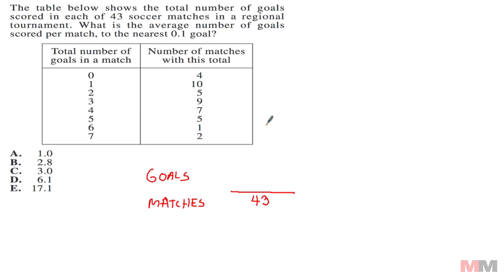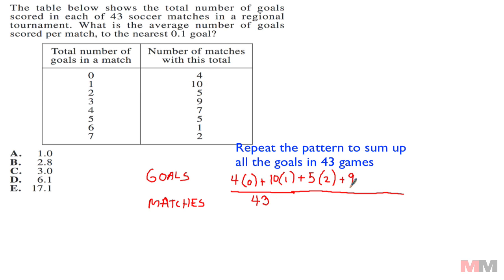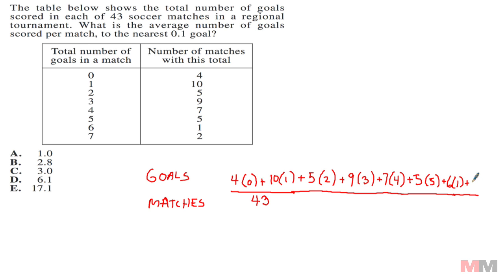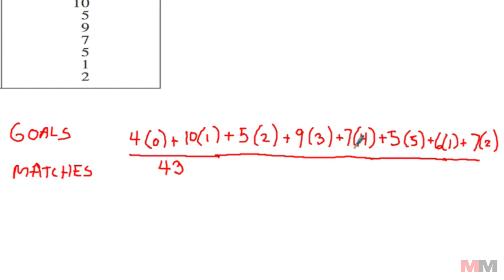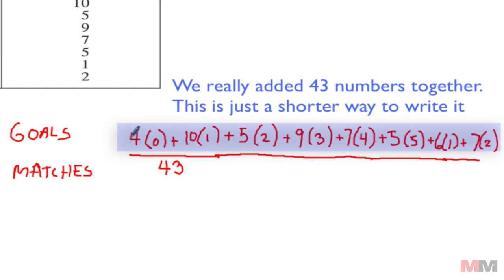We're going to get 43 items. Four matches with zero points—I'm just going to write it like this: instead of adding zero four times, it's the same as 4 times 0, added to 10 matches with 1 point, 5 matches with 2 points, 9 matches with 3, 7 matches with 4, 5 matches with 5, 6 matches with 6, and 7 matches with 7. What a long list.